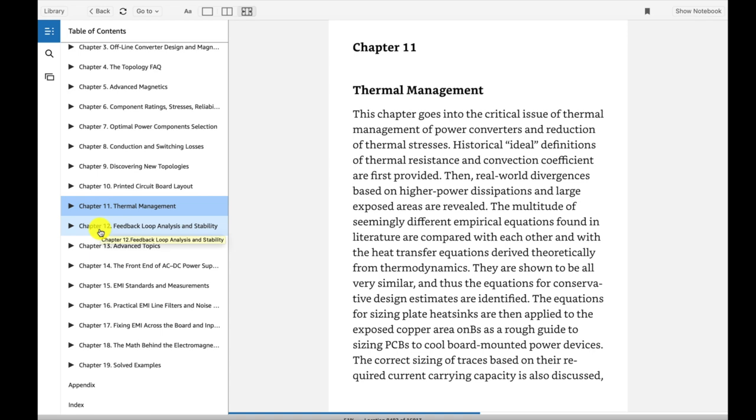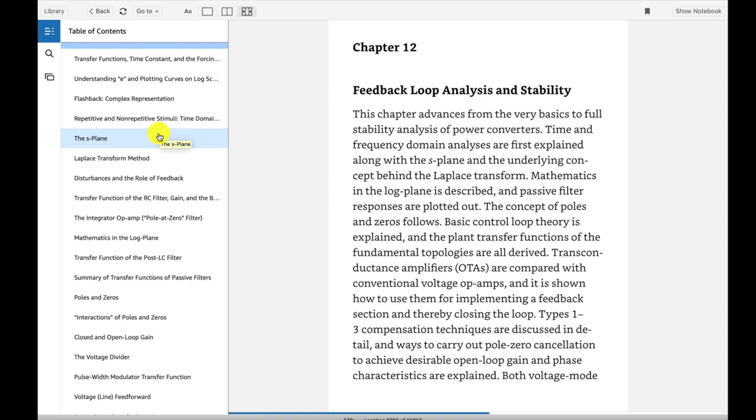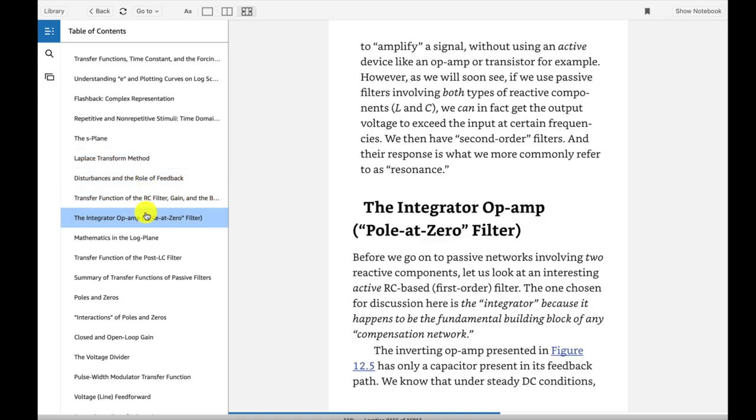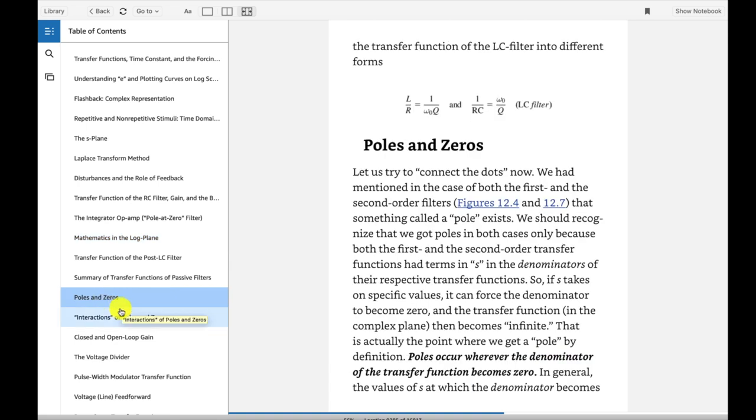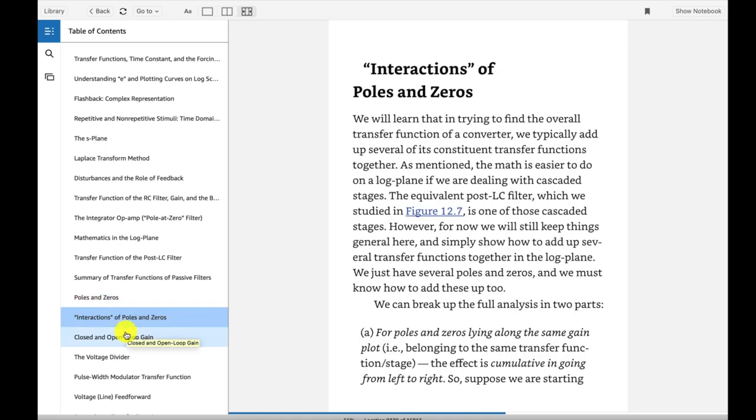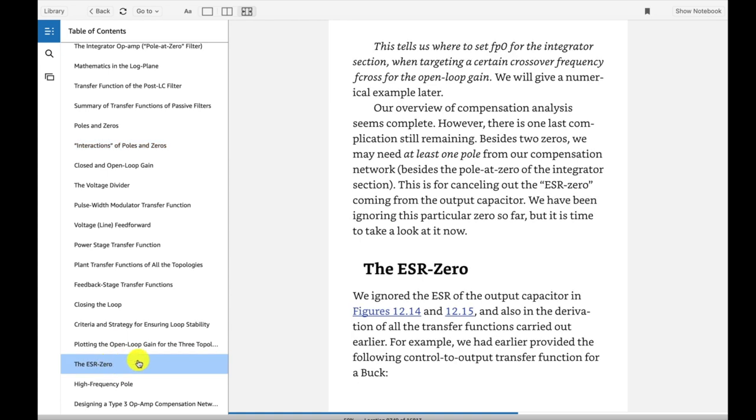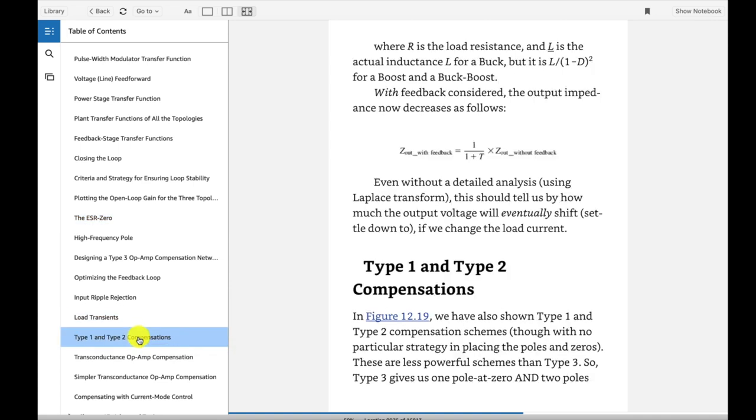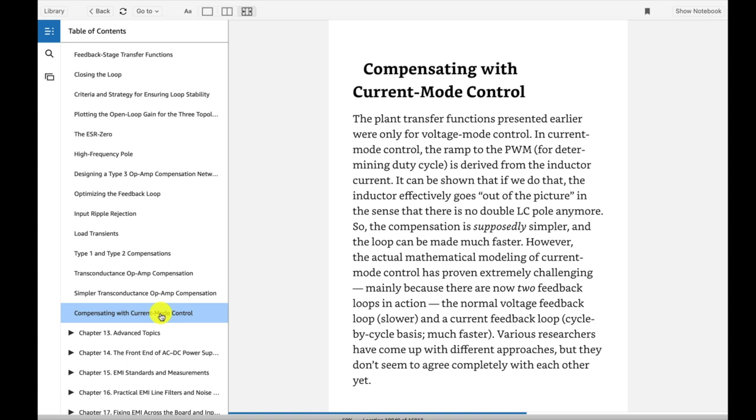And Chapter 11, look at this: thermal management. There's quite a few things, talks about traces. And Chapter 12, feedback loop stability analysis. Check this out. This chapter has a lot of information in it. Talks about Laplace transforms. I mean, he really goes into this pretty deep. Poles and zeros, and talks about the log. So this is a great chapter just to refresh yourself on gain, loop transfer functions.